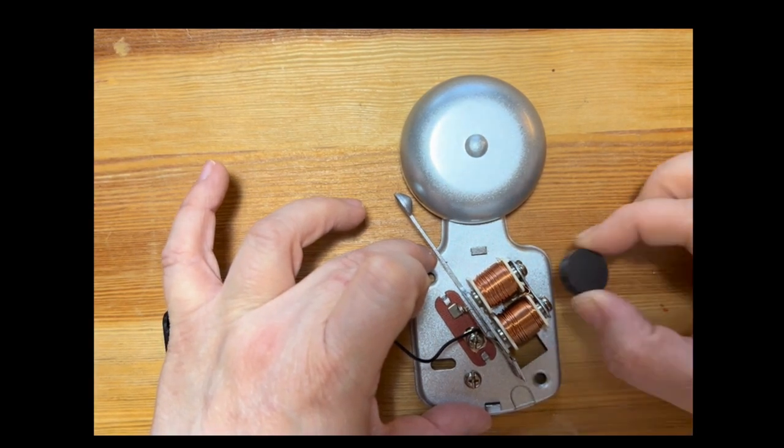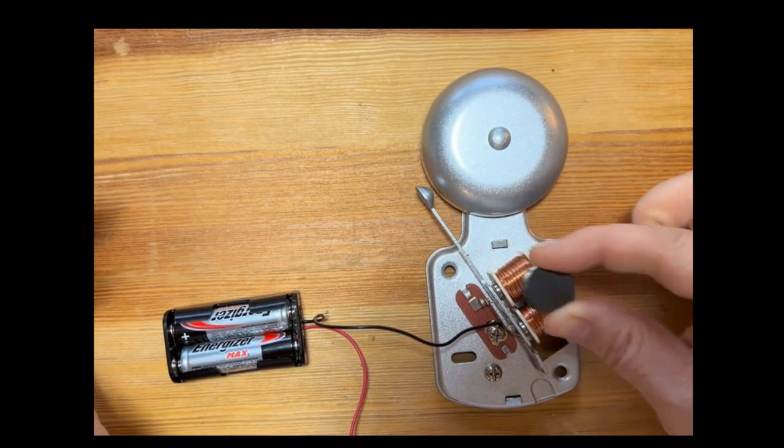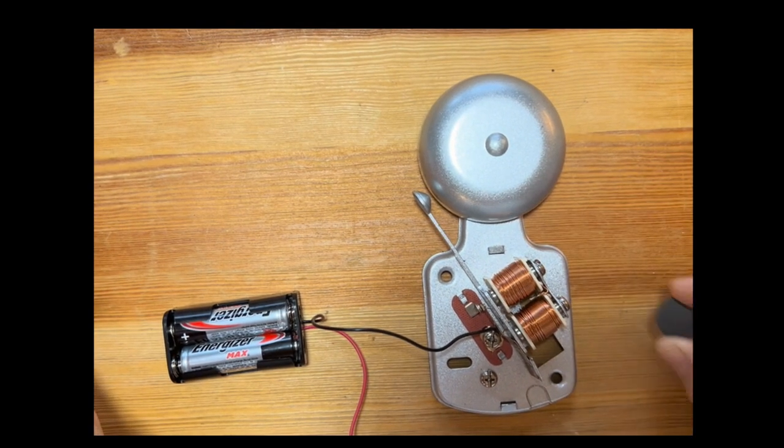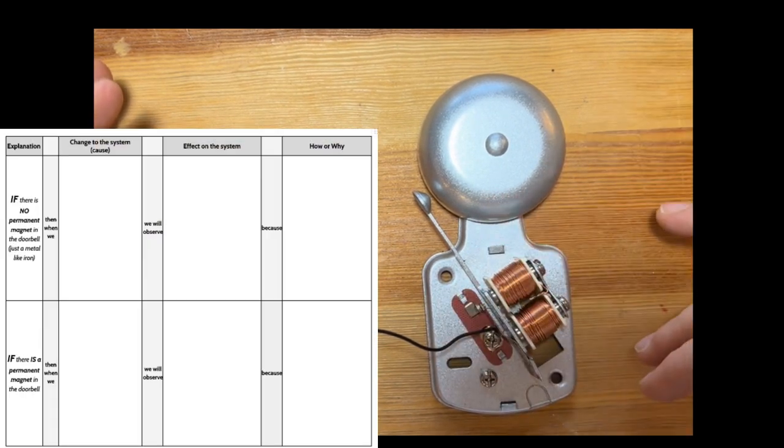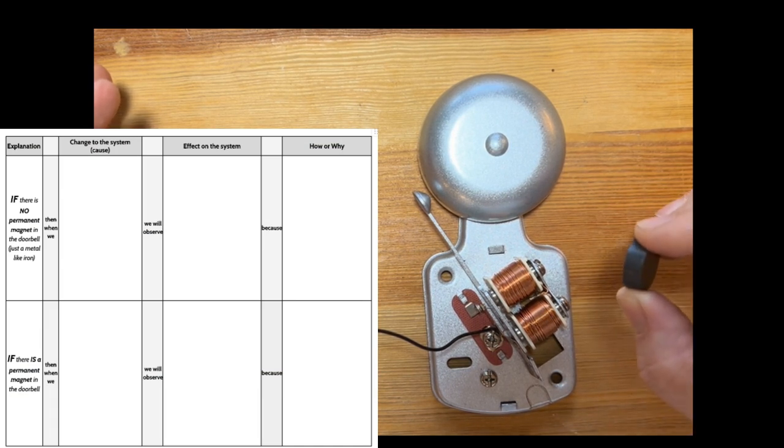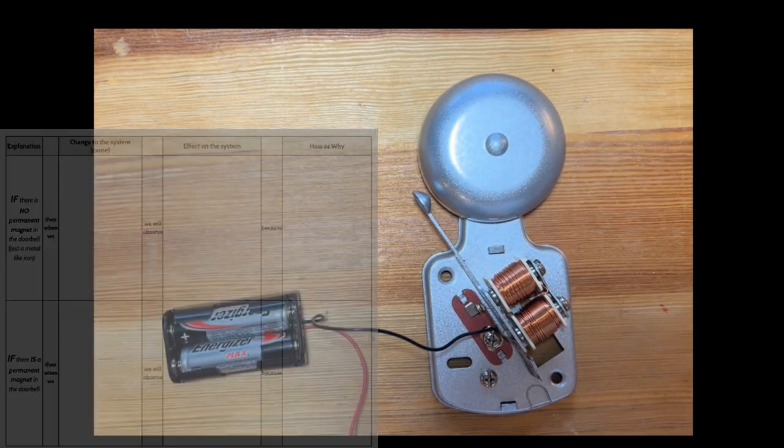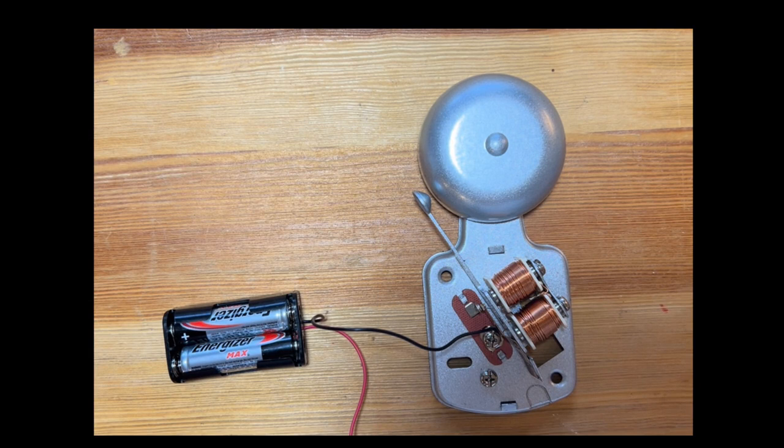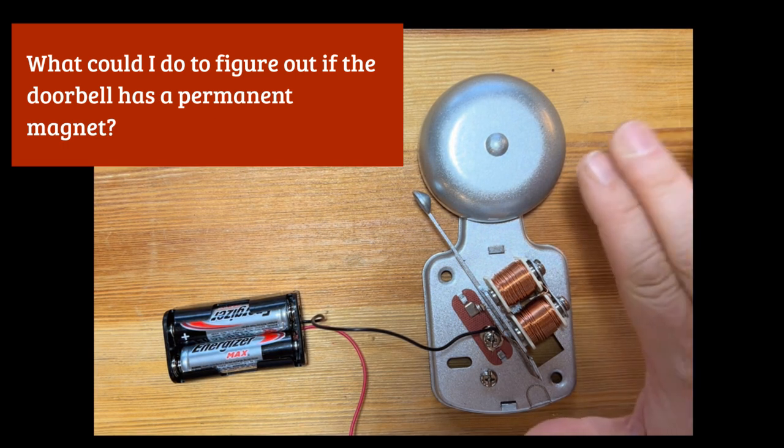So I want to know in the first portion: is there a permanent magnet inside of this doorbell, like this is a permanent magnet, or is it that this doorbell is simply made out of magnetic material like iron? What would I need to do in order to answer that question? What kind of an investigation would I need to do in order to determine is this magnetic or a magnet?